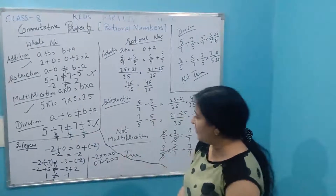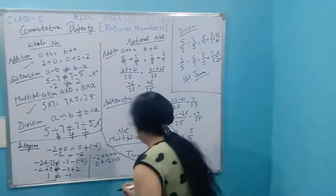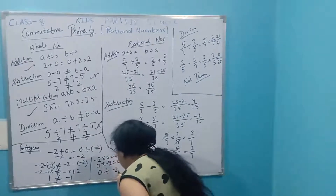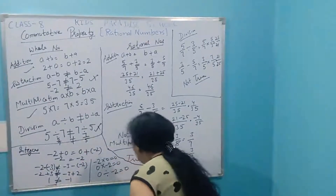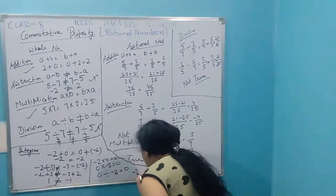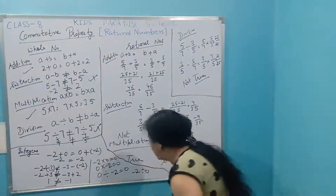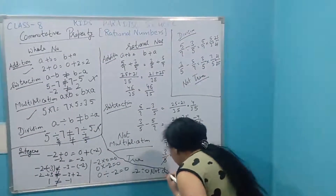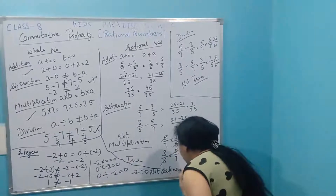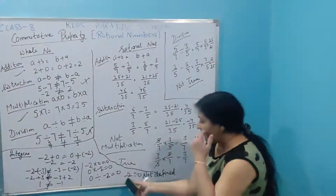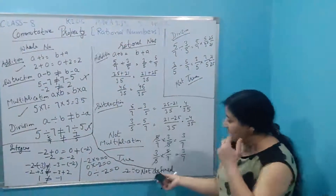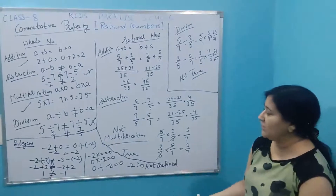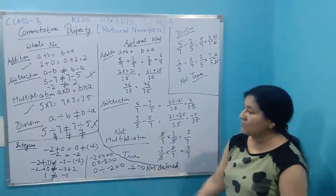Now for division of integers: zero divided by minus two is zero. But minus two divided by zero is not defined. Any number divided by zero is not defined. So in the case of integers under division, commutative property is not true.